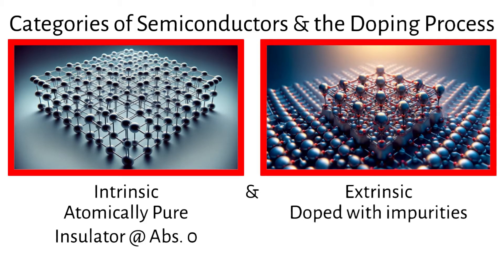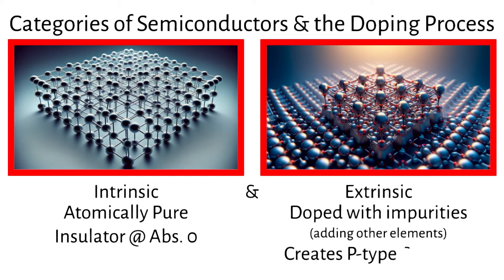Extrinsic semiconductors are doped with impurities to improve their electrical properties. Doping is the process of adding small amounts of impurity atoms to a pure semiconductor material like silicon to change its electrical properties. It introduces additional charge carriers — increased electrical movement — and depending on what elements are chosen, it creates p-type and n-type semiconductors.